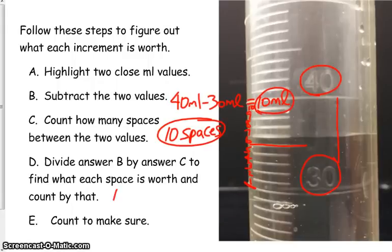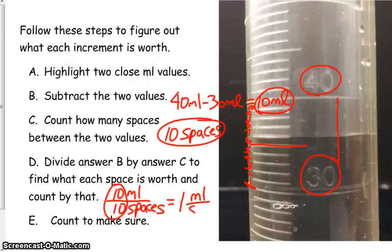So we'll do 10 milliliters, write that down, divided by 10 spaces. We divide our numbers out. That equals 10 divided by 10 is 1. And we keep our units. So I still have milliliters per space. So for every space, it equals 1 milliliter.